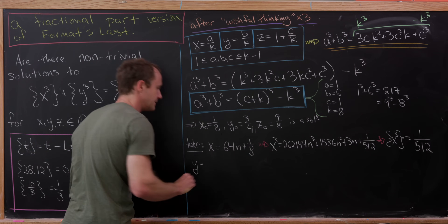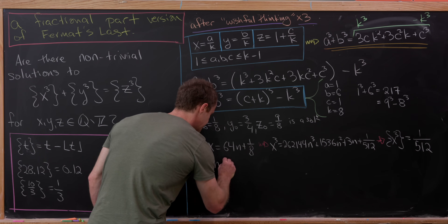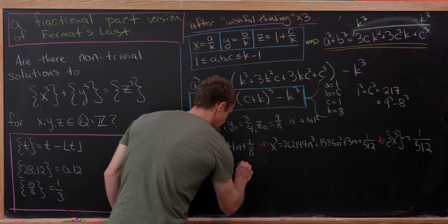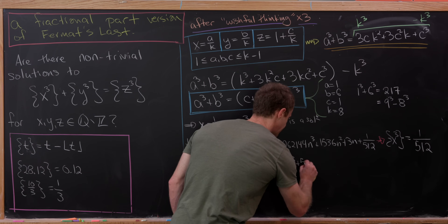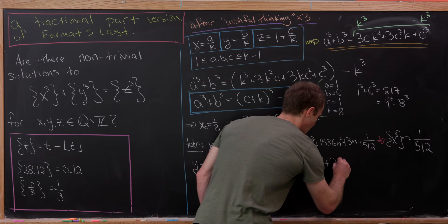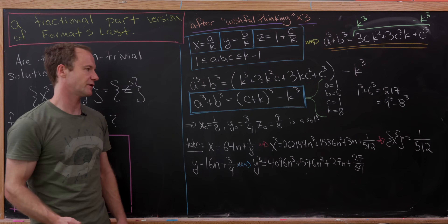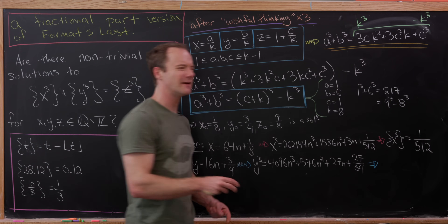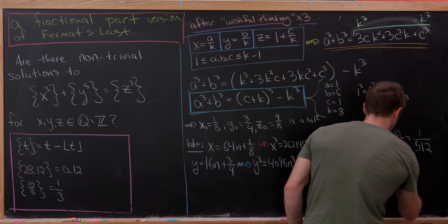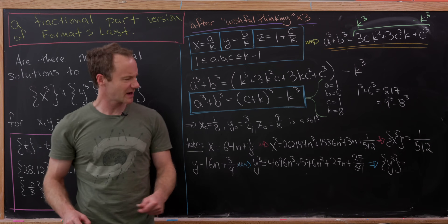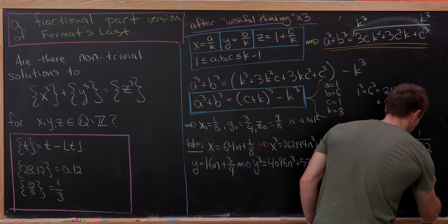For y, we only need to go up to 16: set y = 16n + 3/4. Then y³ = 4,096n³ + 576n² + 27n + 27/64. All but the last term is an integer, so the fractional part of y³ = 27/64 = 216/512.